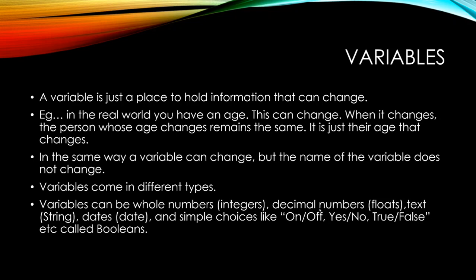Decimals like 1.5, 1.6 - they are called floats. We've got text, which is words, and they are called strings. And then we've got dates, which is the date type of variable. And then we've got other choices like on-off, yes, no, true and false, 1 and 0, and they are called booleans. You need to know these things. Pause the video right now and make sure that you understand each of those things.